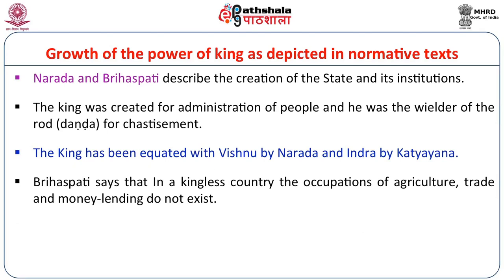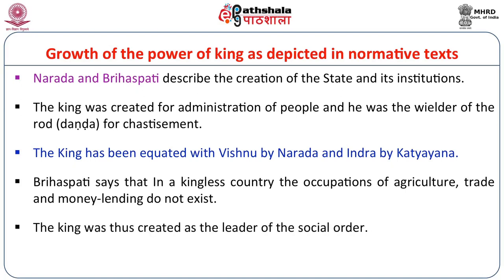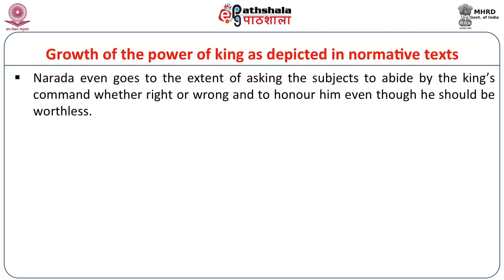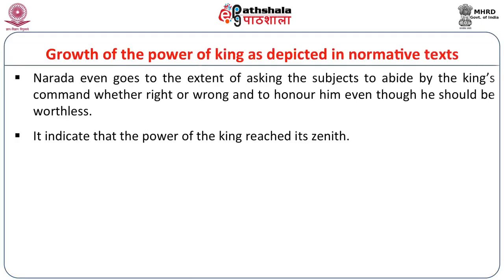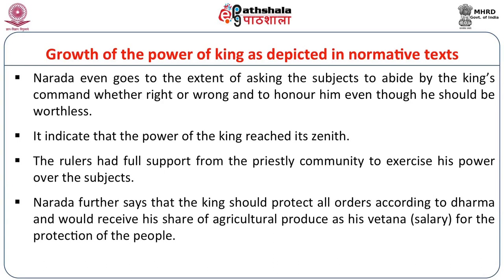Vrihaspati says that in a kingless country, agriculture, trade, and money lending do not exist; the king was thus created as the leader of social order. Narada even goes to the extent of asking subjects to abide by the king's command whether right or wrong and to honor him even though he should be worthless. Even a worthless king should be followed — this is the norm set by authorities in the Dharmashastra. These data indicate that the power of the king reached its zenith in the Gupta period, with the full support of the priestly community.